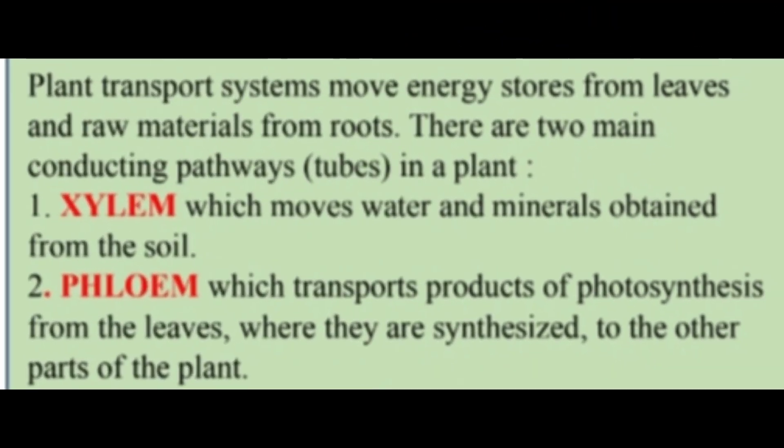The plant transport system moves energy stored from leaves and raw material from roots. There are two main conducting pathways and tubes in a plant. The two main components of transportation in plants are xylem and phloem.